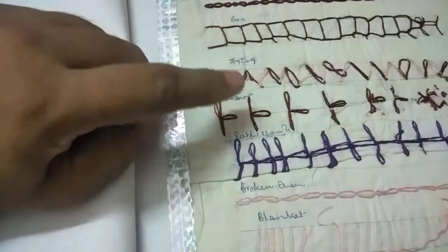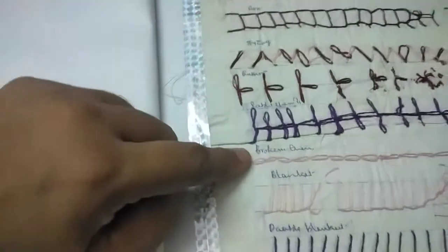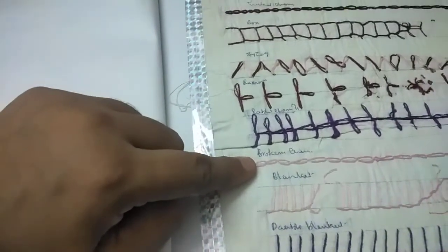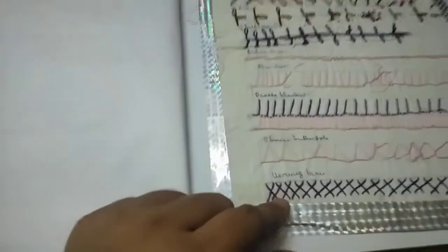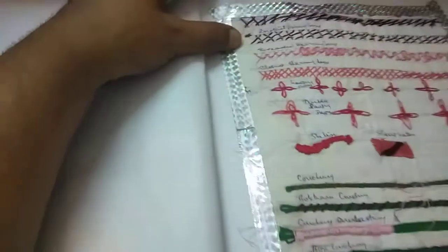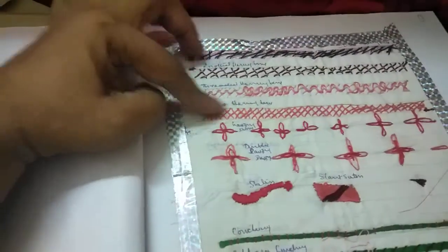Box Stitcher, Rishan Stitcher Broken Chain, Blanket, Herringbone, Lazy Daisy